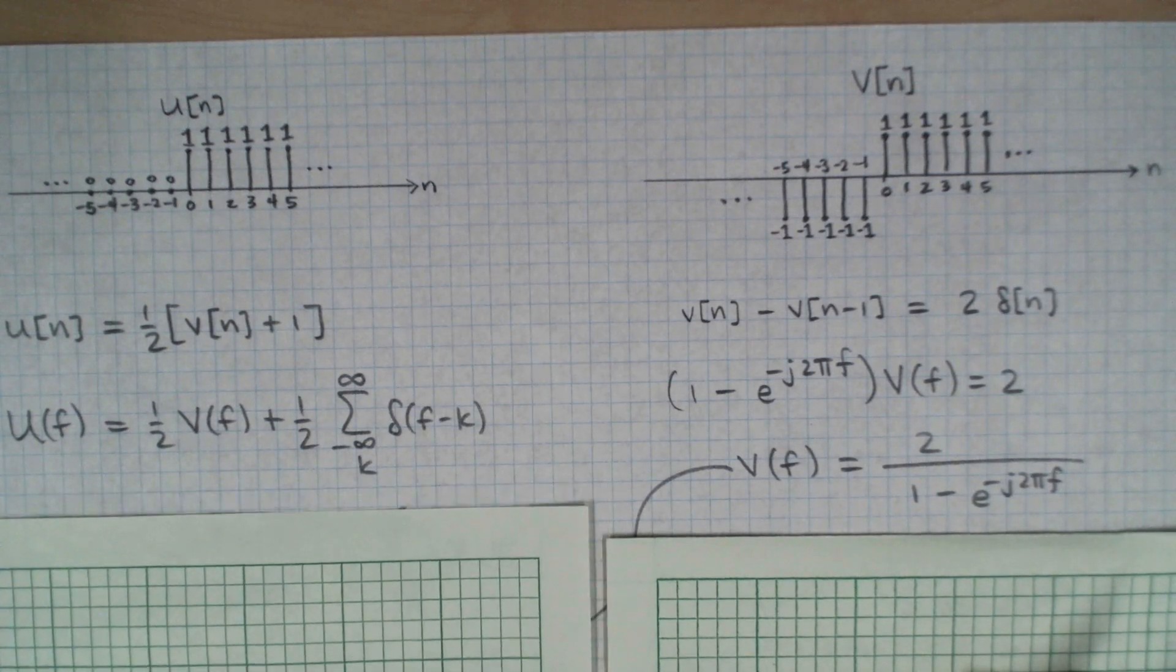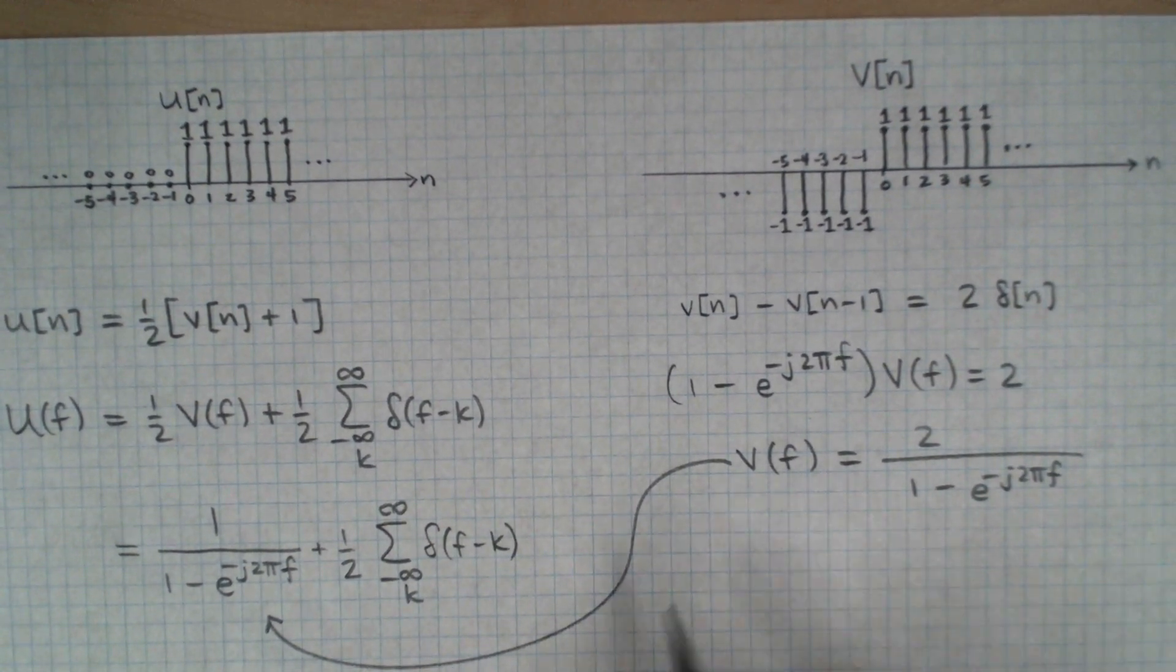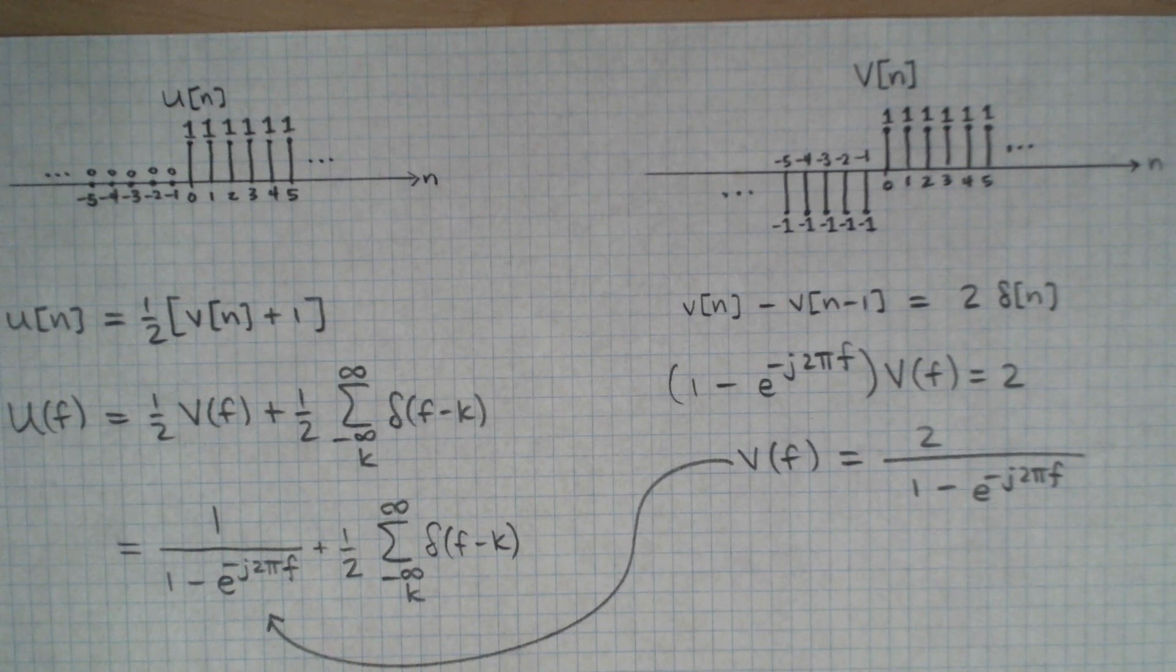And then the last step is simply to substitute the expression for the V Fourier transform from the other side, and this gives us the full transform of the unit step function.